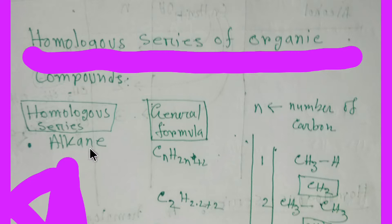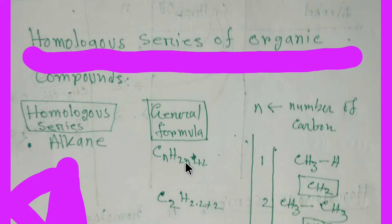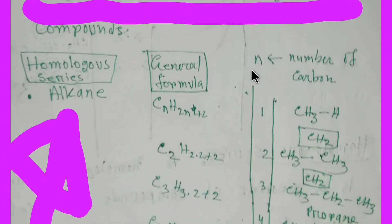This is alkane. The general formula of alkane is CₙH₂ₙ₊₂, where n is the number of carbons. If you take n=1, then you get 1 carbon and 2×1+2 = 4 hydrogens, giving CH₄. That is 1 carbon and 4 hydrogens.